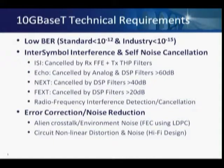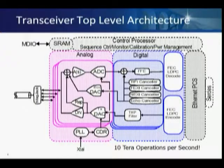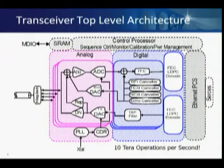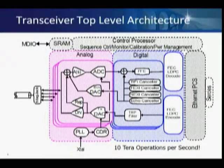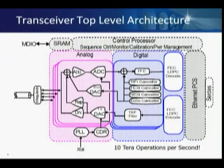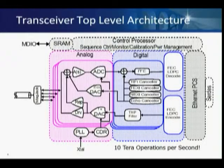Looking at the top-level architecture: the signal comes in through the line, goes through a mag-jack — a combination of jack and isolation transformer — through a summing node, through a gain stage with some boost, and through a high-fidelity analog-to-digital converter into the digital domain. In the digital domain, 80% of the digital logic on our chip consists of digital FIRs (Finite Impulse Response filters) for feed-forward equalization, RFI cancellation, FEXT cancellation, NEXT cancellation, and echo cancellation. These are not DSP processors — they are hardwired digital logic doing about 10 terabits of operations per second.